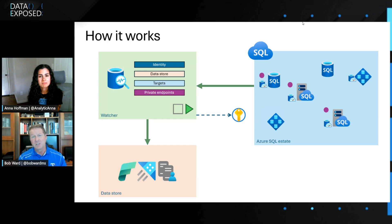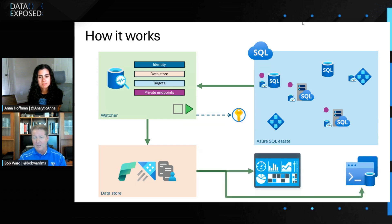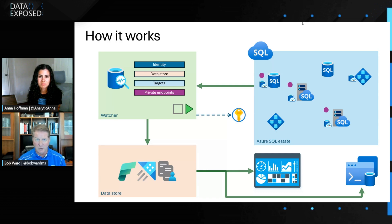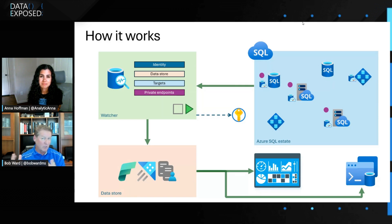You're going to be able to visualize the Kusto store either through the portal, through a KQL query, or in the case of Fabric, through real-time analytics. The most common way is to view this information in the form of pre-built dashboards in the Azure portal. This is a separate service collecting data from your SQL servers using what is already built into SQL today — there's such rich telemetry that the engine already has — and putting it in a separate store you can query independent of your workload.